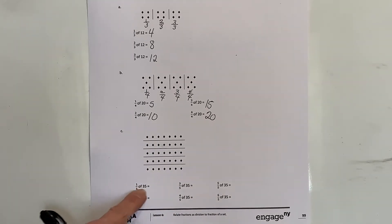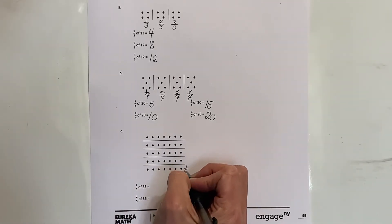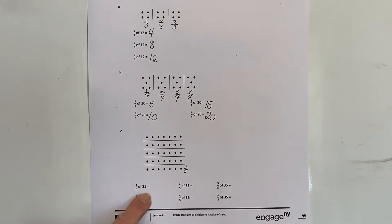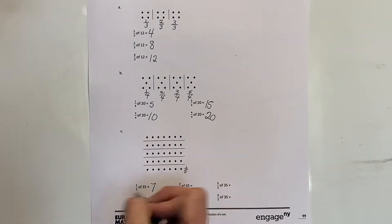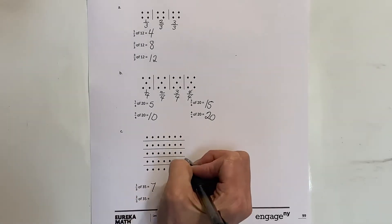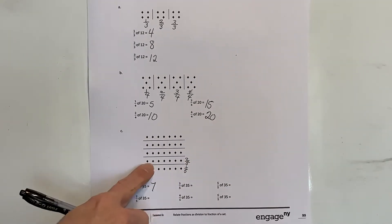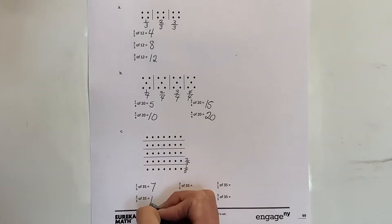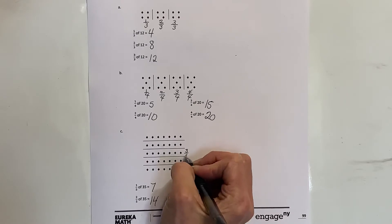One-fifth of 35 - that would be right here. There's seven in each row, so this would be seven. Two-fifths would be seven, fourteen. Three-fifths would be seven, fourteen, twenty-one. Four-fifths would be twenty-one.